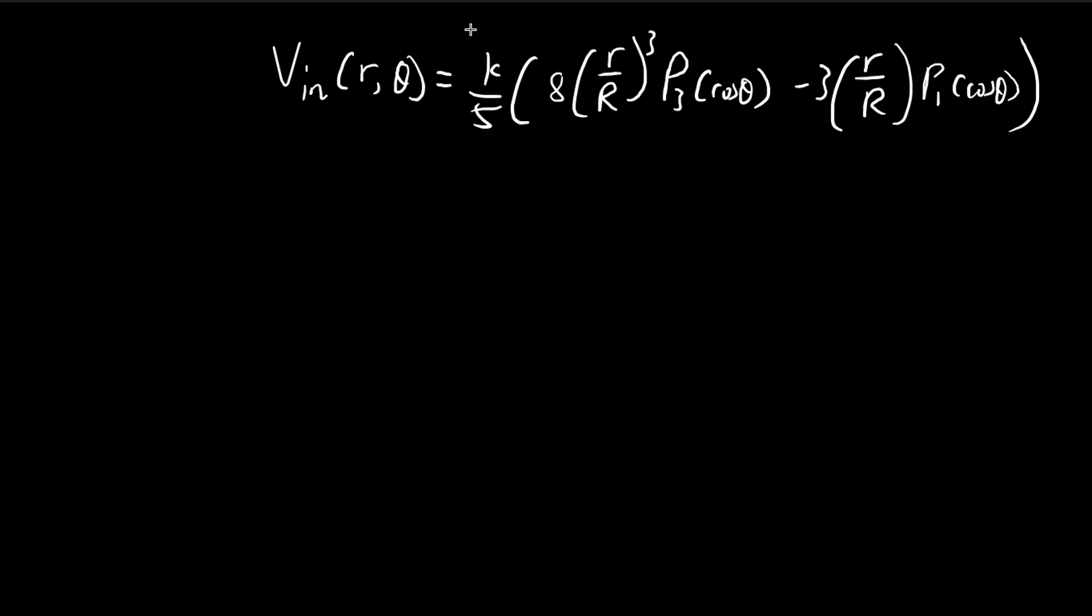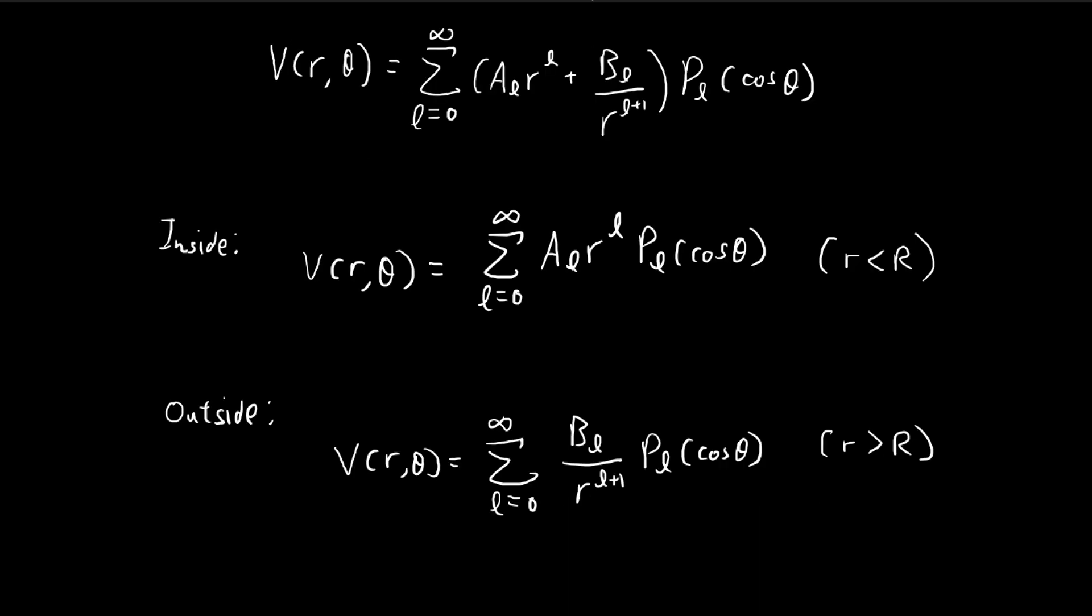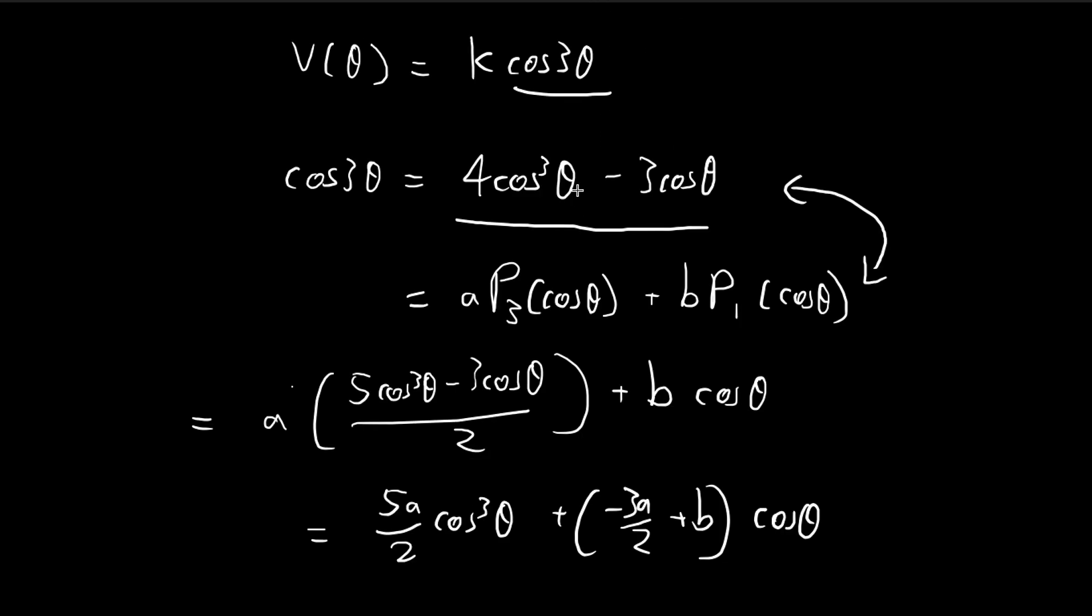So now let's find the potential outside of the sphere. We know the potential inside the sphere because we just found the A constants, but using this we can actually deduce the B constants so we can avoid having to go through all the math again.